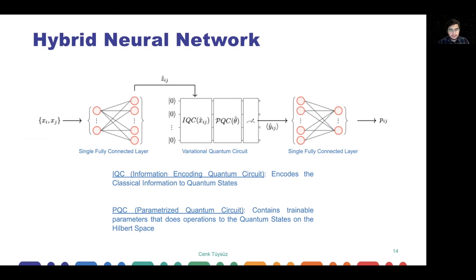How it works is it takes the information and sends it to a single fully connected layer, which is a classical neural network layer. The output is fed to the information encoding quantum circuits. This will take the data and embed it on the Hilbert space, so we create these dots you've seen on the Bloch sphere. The parameterized quantum circuits will have parameters that we need to tune to make those states move along the Bloch sphere. Then we will take the measurements to see the outcomes. The expectation values that we're calculating will be fed to another single fully connected layer to finally get our desired outputs.